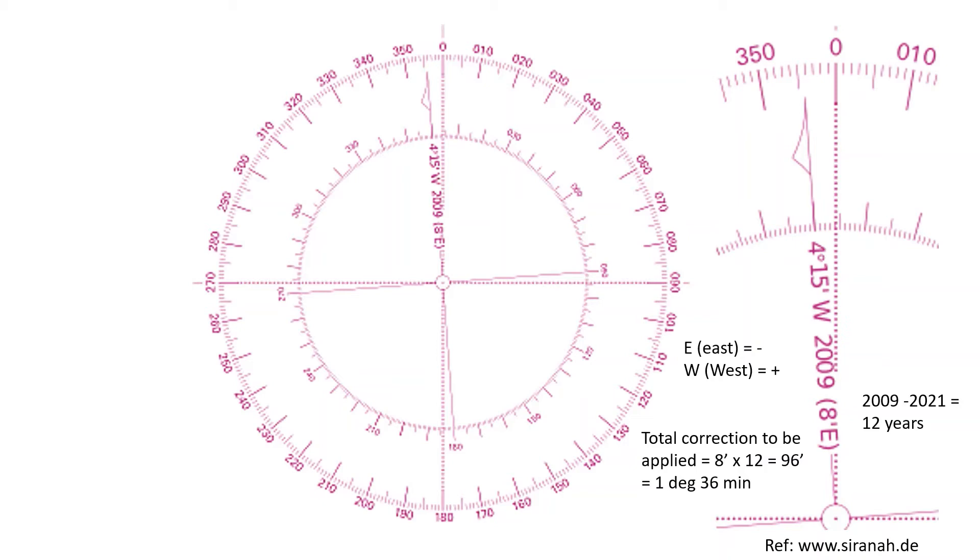So what do I do with this correction? So your variation that was determined in 2009 was 4 degrees 15 minutes west. However in 2021 I will subtract the total correction applied.